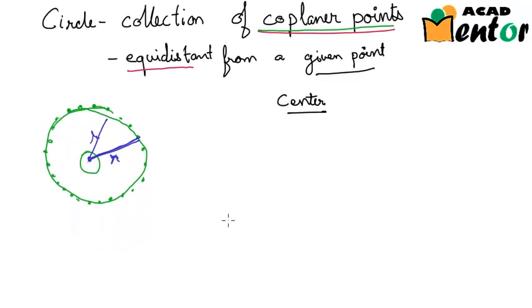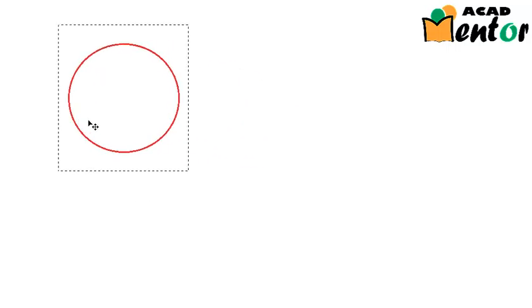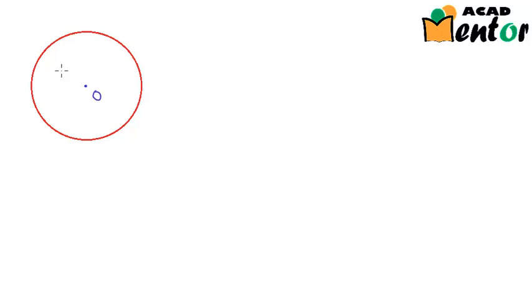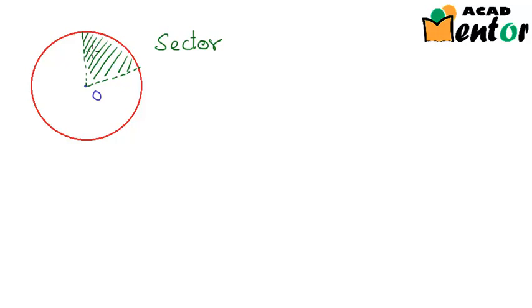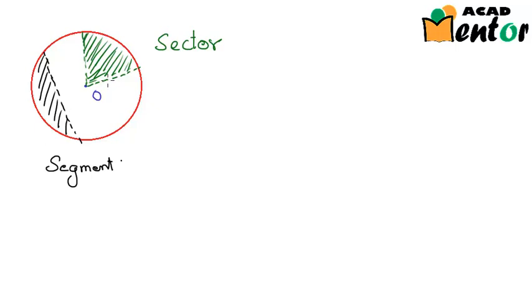Now let us look at what is a segment and a sector of a circle. Let us say this is a circle with center at point O. A sector is nothing but the area between two radii of the circle. So if this is the first radius and this is the second radius, this particular area is known as the sector. A sector of a circle is like a piece of a cake from the center. If this whole circle was a cake, then this would be one single piece. And if there is a line which cuts the circle, then this particular area would be known as the segment of a circle.